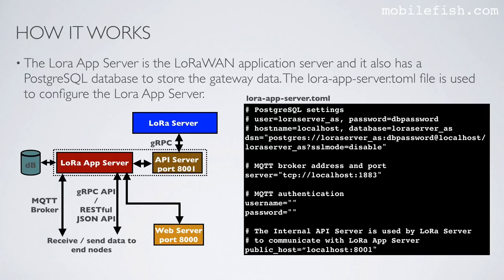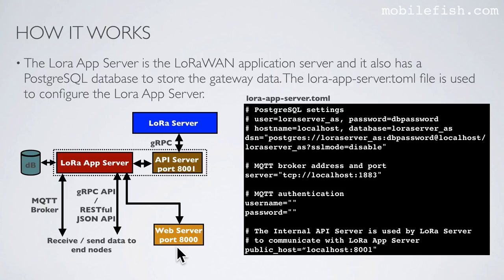The LoRa app server is the LoRaWAN application server and also has a PostgreSQL database to store gateway data. The LoRa server communicates with the LoRa app server through an internal API server listening on port 8001. You can receive and send data to end nodes using gRPC APIs or RESTful JSON APIs, or you can use MQTT. There is also a web server listening on port 8000 which communicates with the LoRa app server. The LoRa app server TOML file is used to configure it. This is the PostgreSQL data source name.